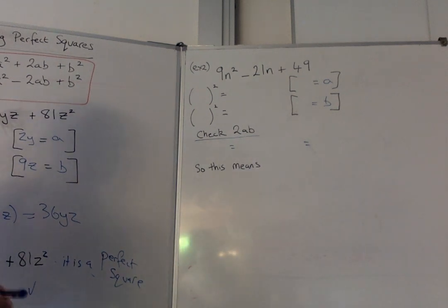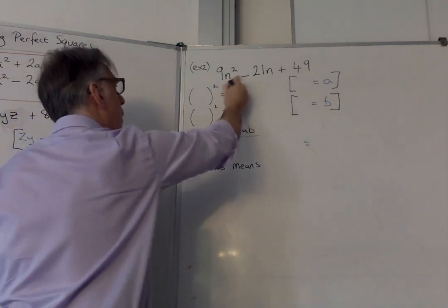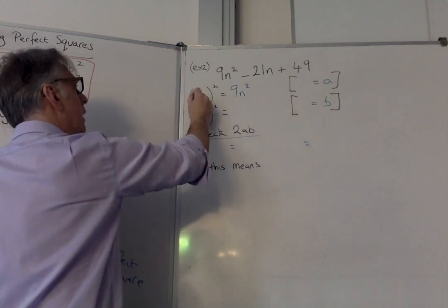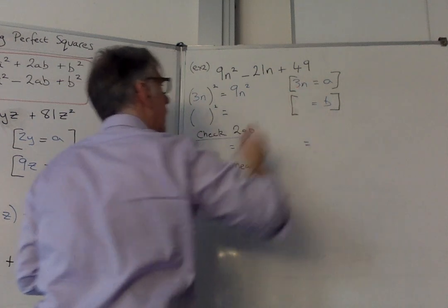OK, so you should have your own answer by now. So I'll go through the same procedure. This should be the a² part. So let's see if it is a perfect square. You have to square root it. And yeah, if you do 3n all squared, you get 9n².